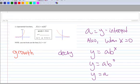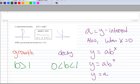And then let's examine the B value. So when I have growth, then I'm going to have a B value that's greater than 1. When I have decay, I have a B value that's between 0 and 1.